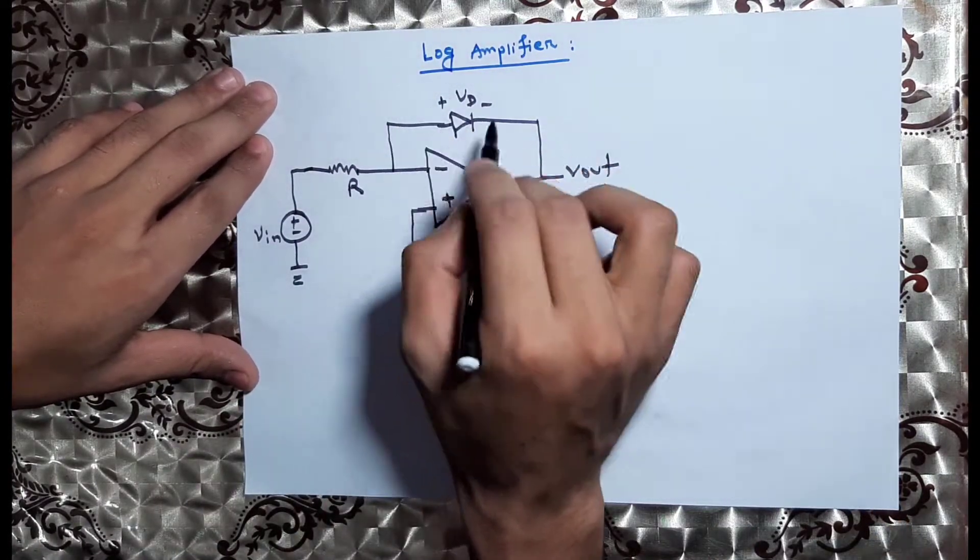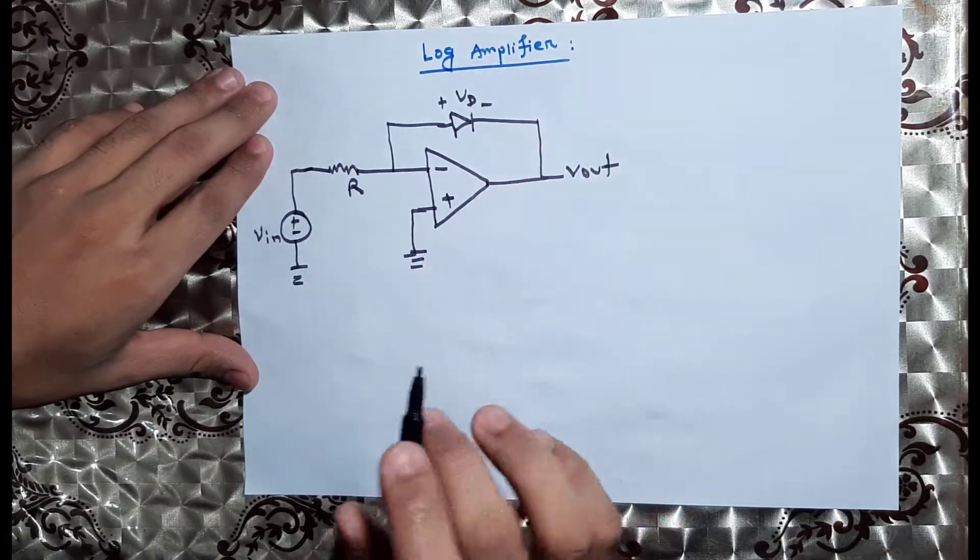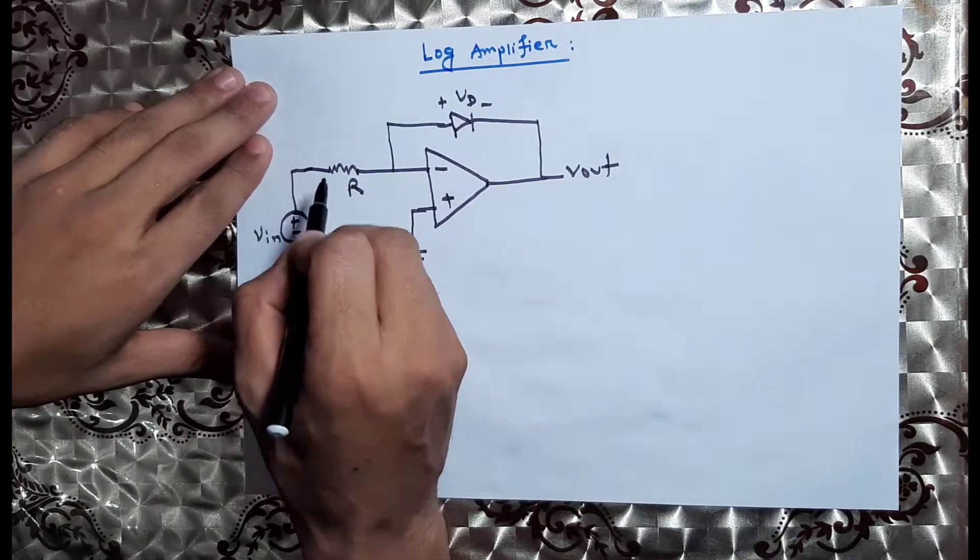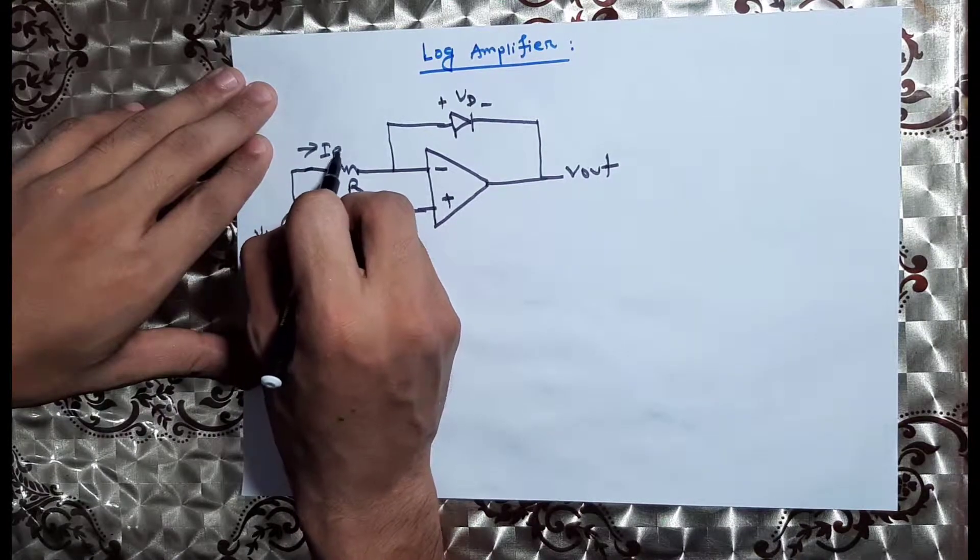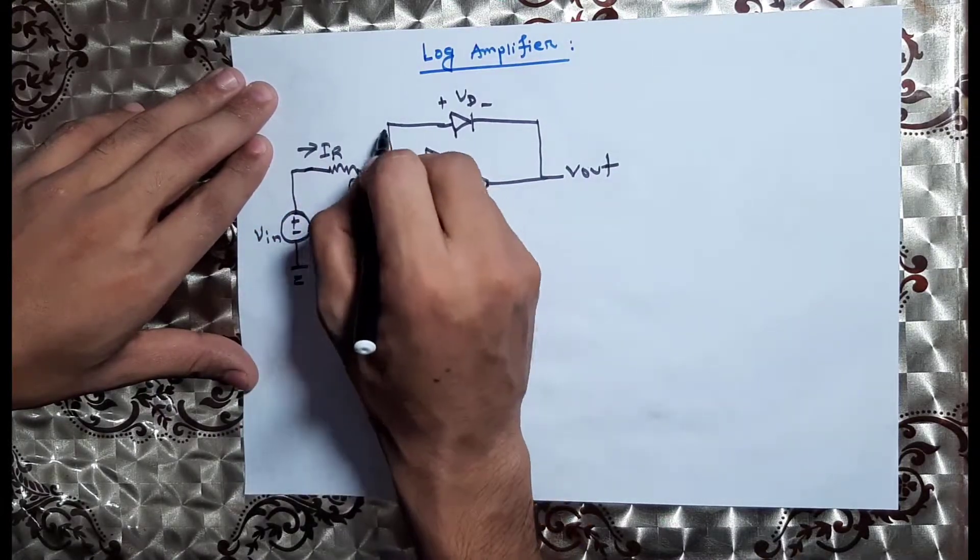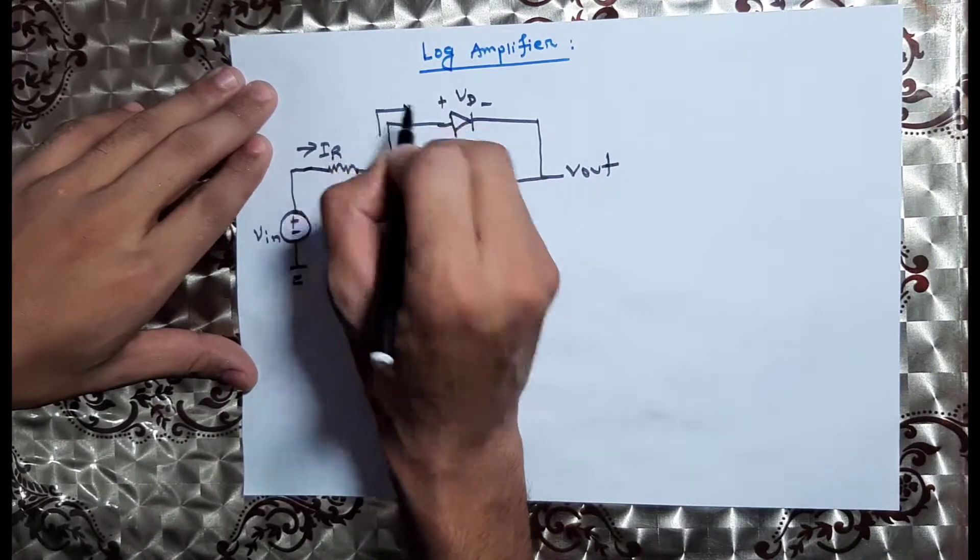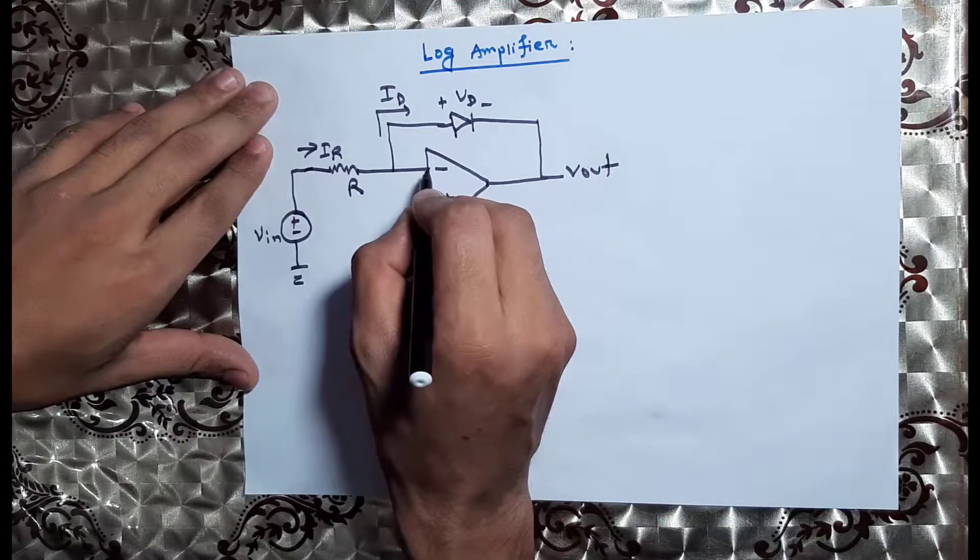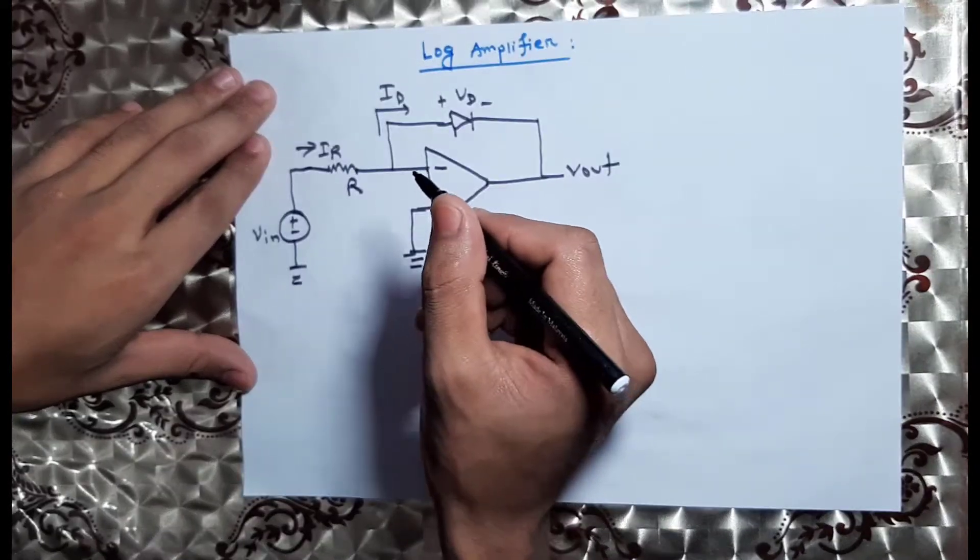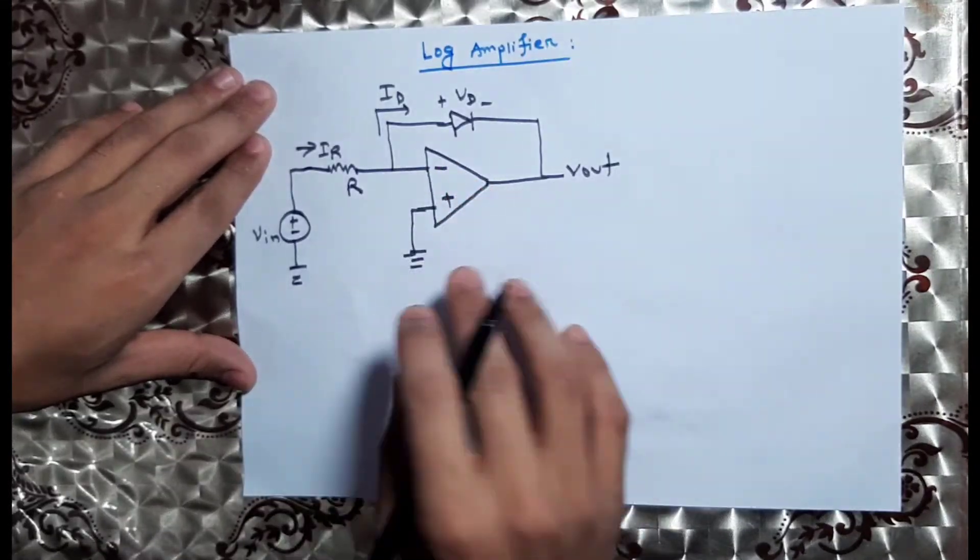We have the voltage across the diode. The current through the resistor is IR. The feedback current is ID. The input impedance is infinity.